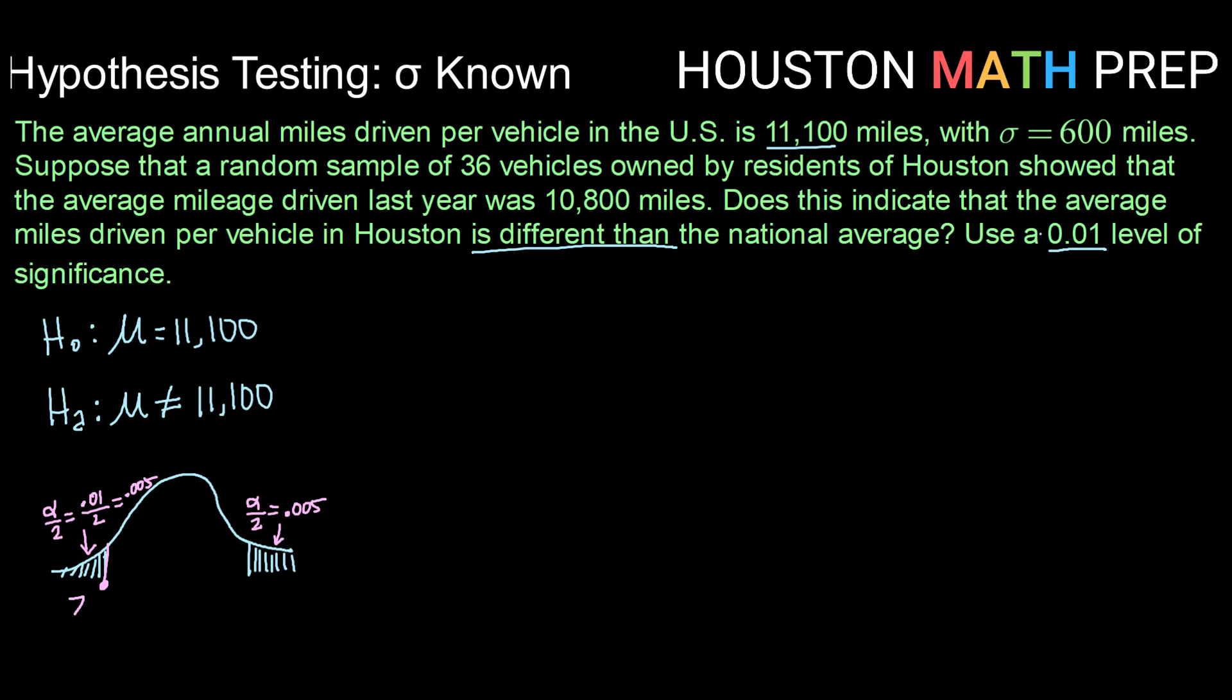So our Z critical or our boundary for our rejection region on the bottom, you can use inverse normal with an area of 0.005 or using our common ones here, this would be negative 2.58 as our Z critical. And up here this would be the same, only positive, so positive 2.58.